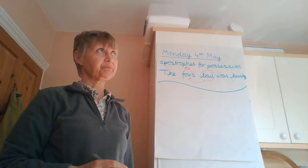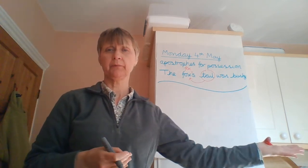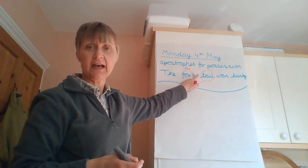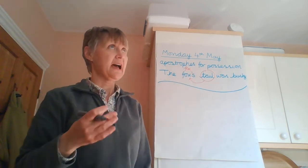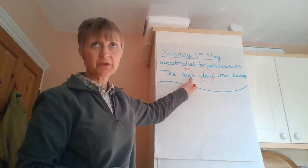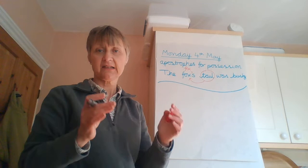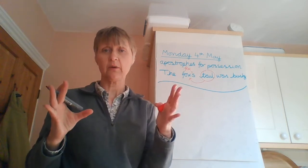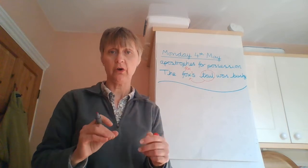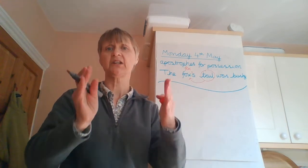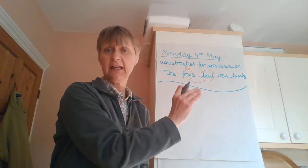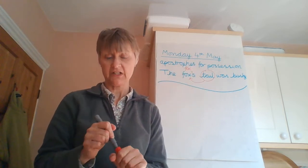So if it was, the dog's lead was by the door, it would be the same rule: dog, apostrophe, S. The house's chimney was falling down. It would be house, apostrophe, S. Because house has no S on the end. Fox has no S on the end. And dog, one dog with one lead has no S on the end. So we put apostrophe and an S. That's your rule for your starter.